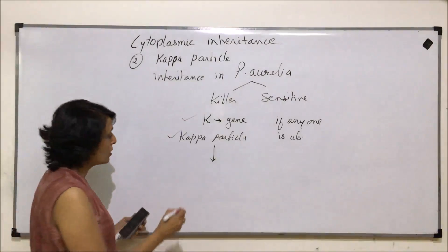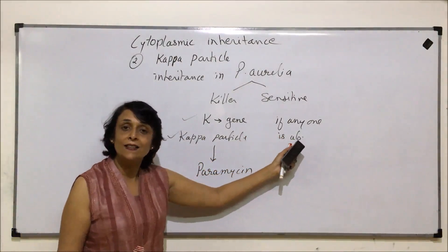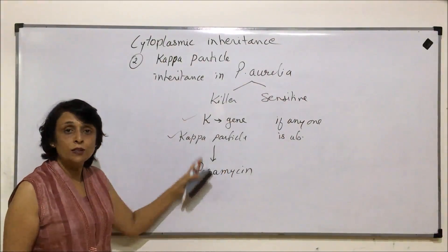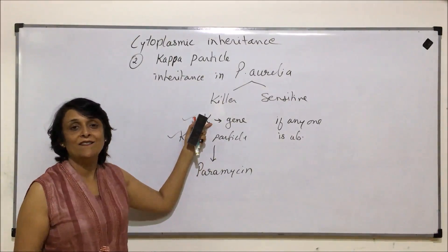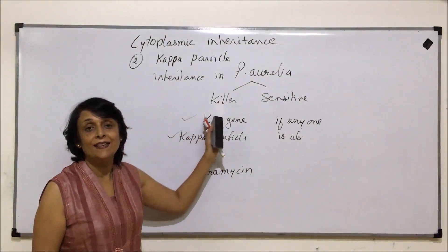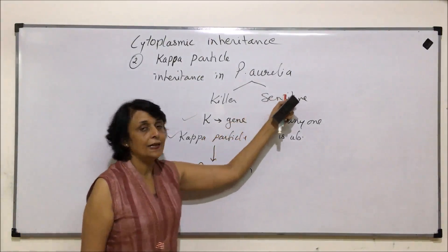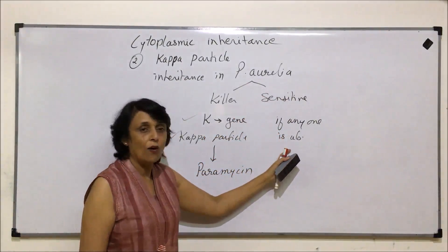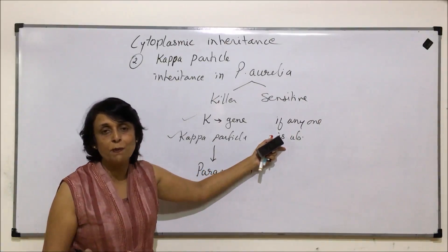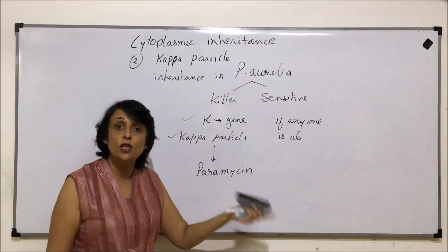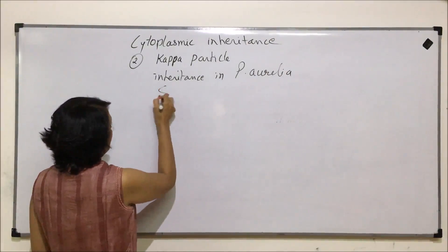The kappa particles are responsible for the production of a toxin known as parameucin, and this parameucin kills the other type of paramecia — the sensitive ones. The ones which secrete parameucin are resistant to this toxin. So killer strains produce parameucin which is toxic to the sensitive strain. Even if a paramecium has only the dominant gene but no kappa particles, or kappa particles but no gene, it will still be sensitive. This inheritance was explained by Sonneborn.